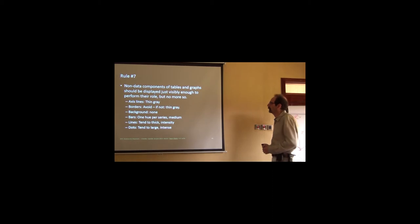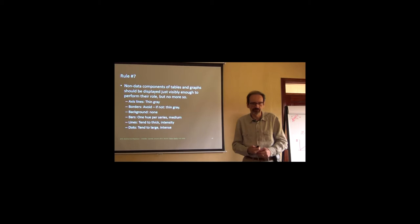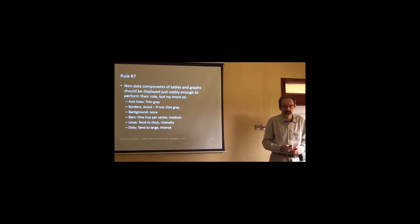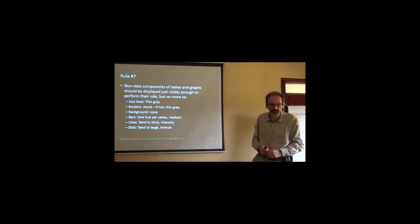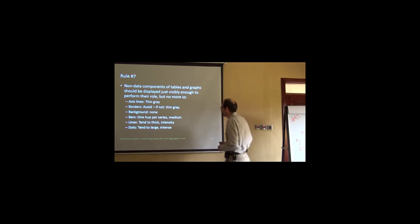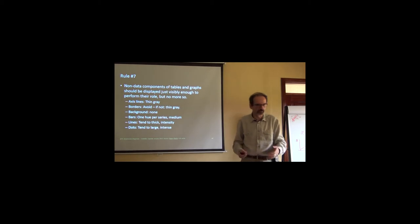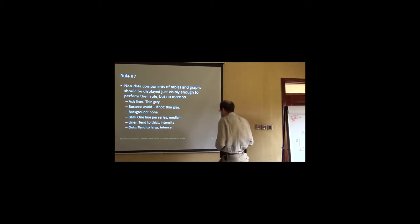Rule number seven: Non-data components of tables and graphs should be displayed just visibly enough so as to perform the role, but no more so. You display what you need to display, but don't overdo it. For instance, axis lines. Do you need them? Normally not, unless you are digitizing things. So, think gray. Borders. Do you actually need borders? Quite often you don't. You can avoid them or thin gray again. Background. Never use a confusing background. It's the best way to completely destroy a plot.